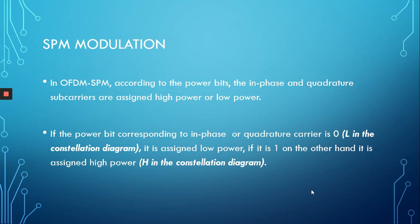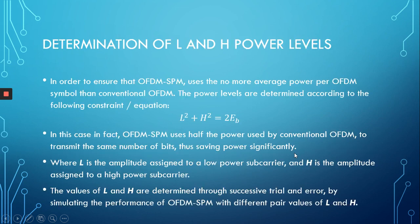In SPM modulation, according to the power bits, the in-phase and quadrature subcarriers are assigned high or low power. If the power bit is zero, it gets low power as shown in the constellation diagram. If it's a one, it is assigned high power (H) as in the constellation diagram. We understand how OFDM-SPM works, the basic concept. However, changing the power of the subcarriers would definitely affect the performance of the scheme.